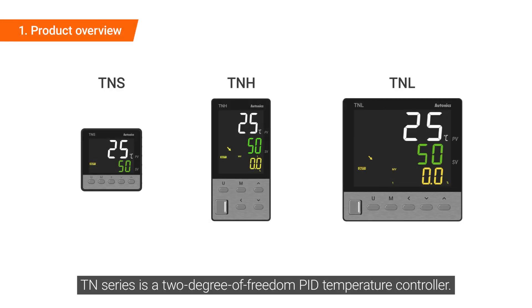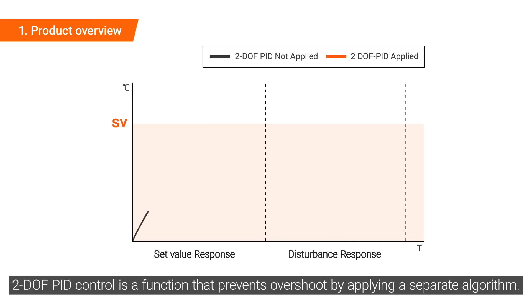TN-Series is a 2 degree of freedom PID temperature controller. 2-DOF PID control is a function that prevents overshoot by applying a separate algorithm.